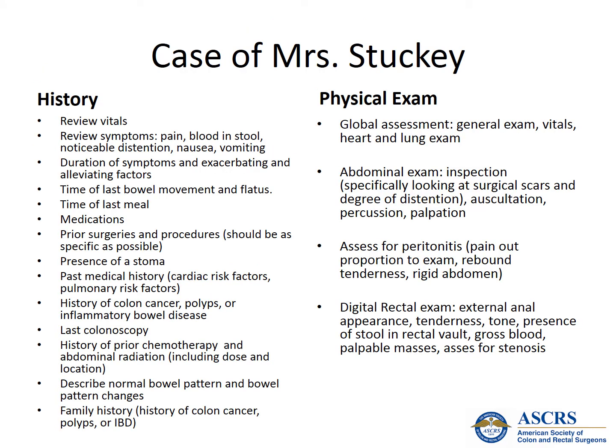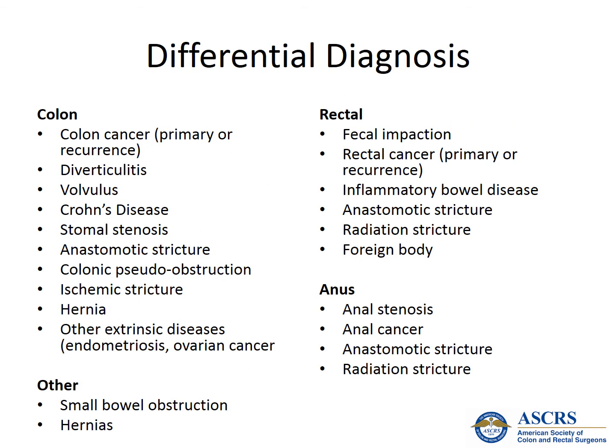The key to managing a patient with a large bowel obstruction is taking a thorough history and physical. An initial global assessment is very important to help you triage this patient's workup and management. As you are seeing this patient, you should have a mental running list of possible diagnoses. Your history, physical, lab tests, radiologic tests, and endoscopic studies should narrow your differential at each step of the way. Please pause this slide to review the differential diagnosis of large bowel obstruction based on location.